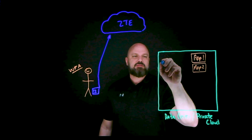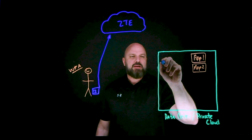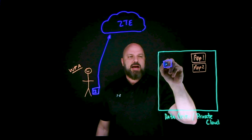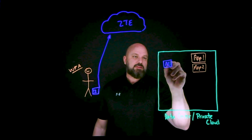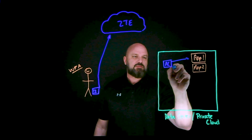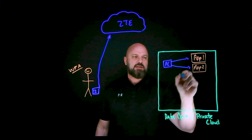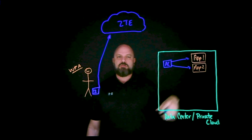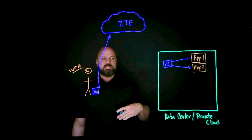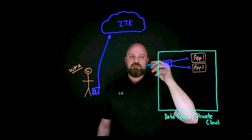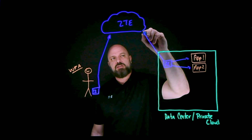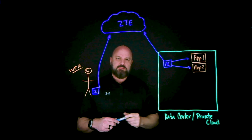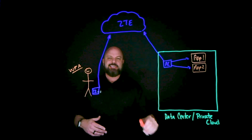To get traffic back down, we have the ZScaler Application Connector — not to be confused with other connectors. This sits on the internal network where it can talk to all your internal applications, and crucially, it doesn't listen for anything inbound — it reaches outbound to the Zero Trust Exchange.